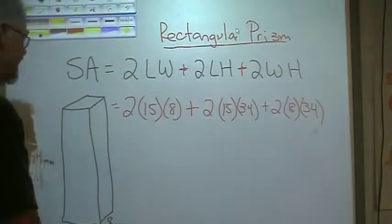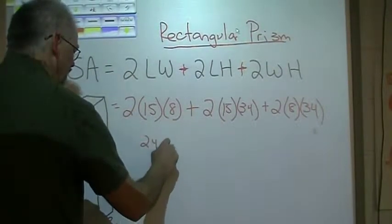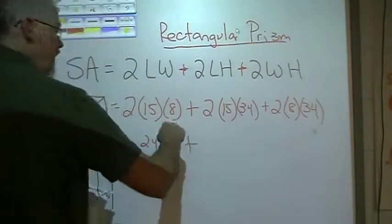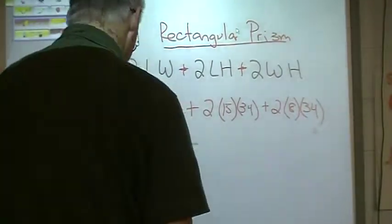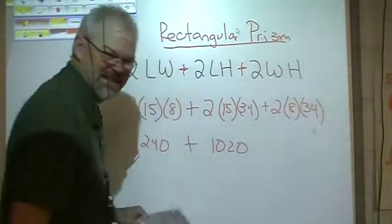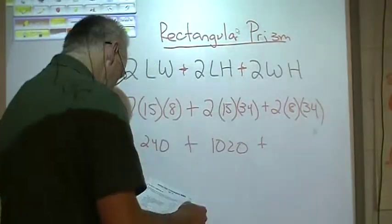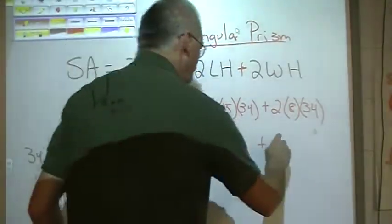Puzzle pieces, I put them in. It's all calculator work now, or long—if you don't have one, anybody should be able to multiply this out. 2 times 15 is 30, 8 times 30 is 240, plus 30 times 34, that's 1020. I did that in my head, I got it done right here anyhow. Next one, 2 times 8 is 16 times 34, 544.